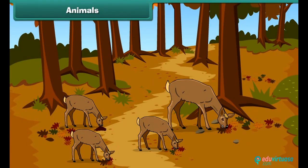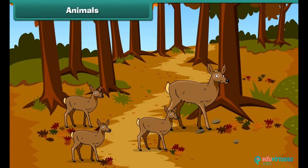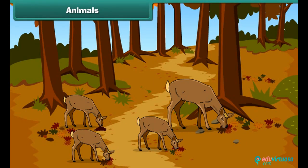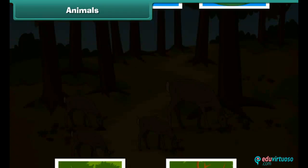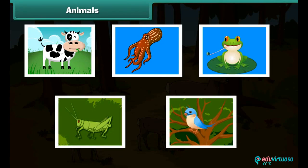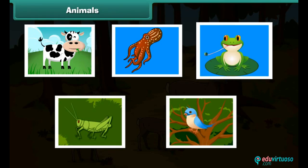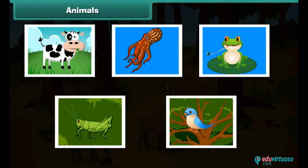As we all know, animals are living organisms. They can move and grow, and they have the ability to produce their own young ones. We can see different animals all around the world — they are in various sizes, shapes and colors. There are different types of animals living on this planet: land animals, water animals, amphibians, insects and birds.